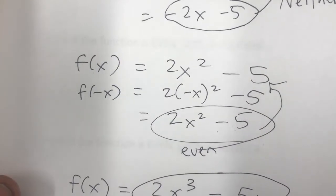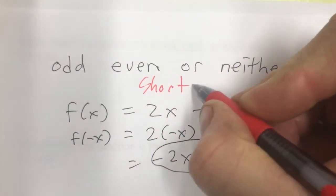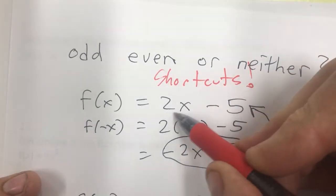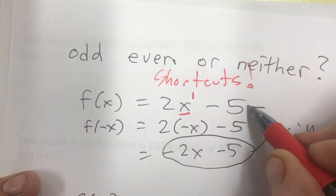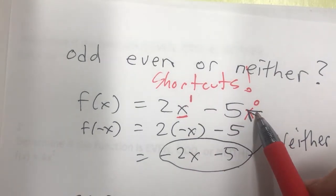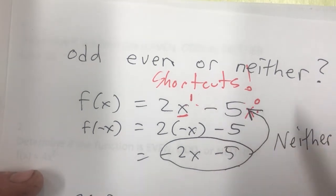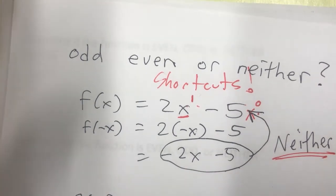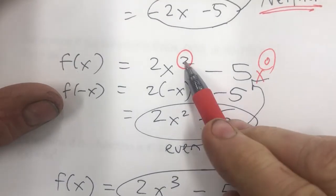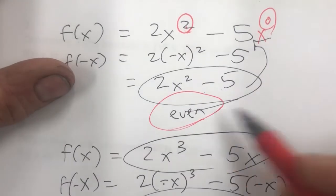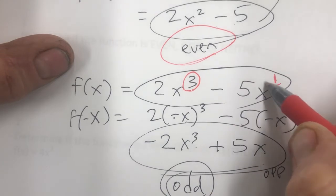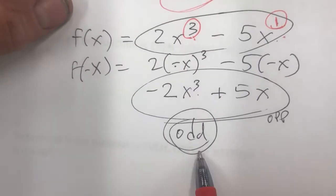Here's a shortcut. For f(x) = 2x - 5, the term 2x has exponent 1 (odd) and the constant -5 has exponent 0 (even) — mixed, so it's neither. For 2x² - 5, the exponents are 2 and 0 — both even, so it's an even function. For 2x³ - 5x, the exponents are 3 and 1 — both odd, so it's an odd function. All you have to do is check whether all the exponents are even or all are odd.